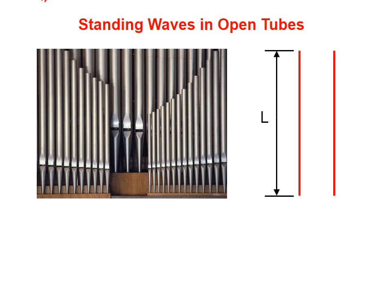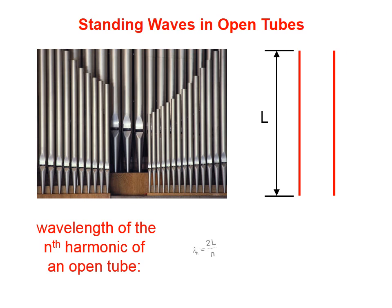When we have an open tube of length L, the wavelength of the nth harmonic is given by this equation: λₙ = 2L/n, where n is any positive integer. This is the exact same equation for the wavelength of the nth harmonic with a string, so we've met that equation previously.